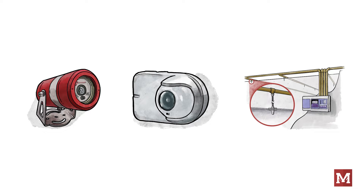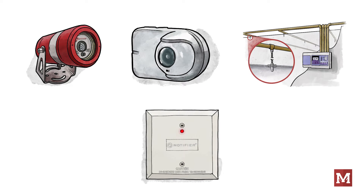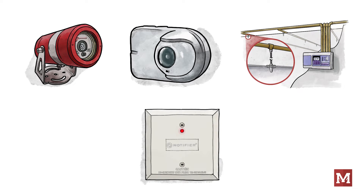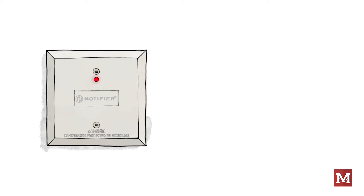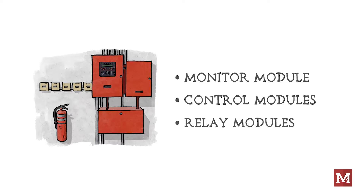Today we're going to round out the initiation side of fire alarm layouts with our last common device — that is the module. In a fire alarm system, a module is a device that performs a specific function. They can be used to monitor something or interact with something. To keep things simple, we're going to refer to the different types as monitor modules, control modules, and relay modules.